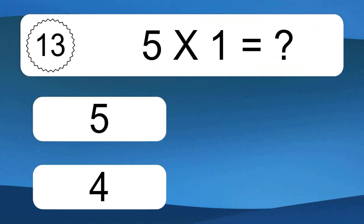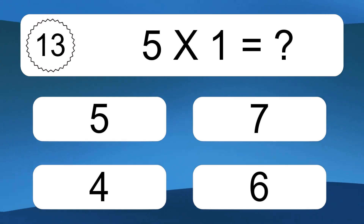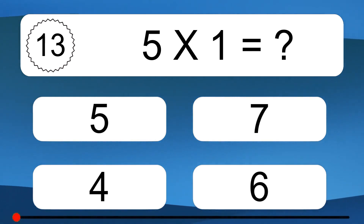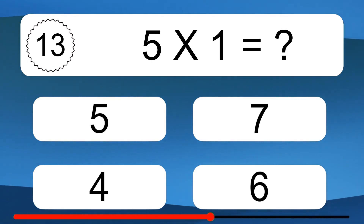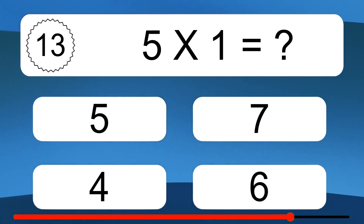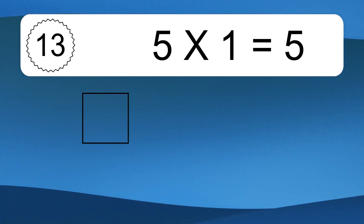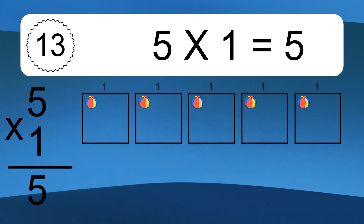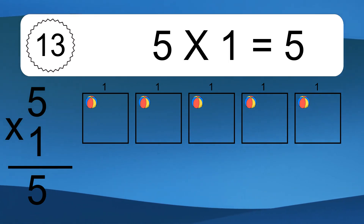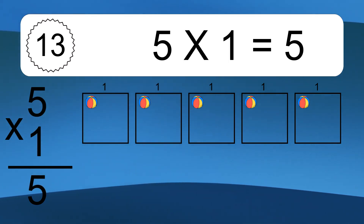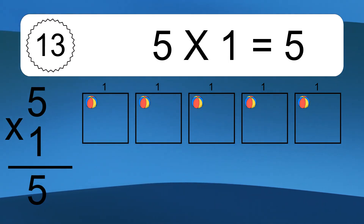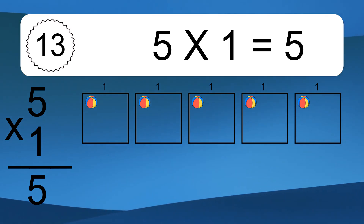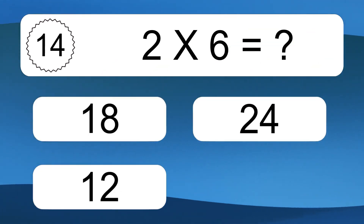5 times 1 equals what? 5 times 1 equals 5. We have 5 boxes and each box has 1 colorful ball inside. If you count all the balls in all the boxes together, you will have 5 times 1 balls. This equals 5 balls.